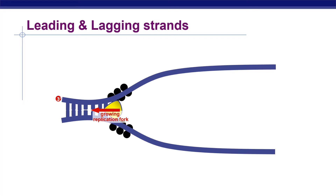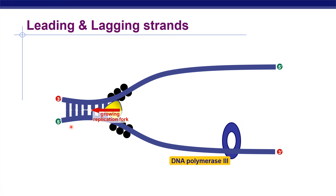DNA polymerase can add new nucleotides only to the 3 prime end of an existing strand and hence can only synthesize DNA in the 5 prime to 3 prime direction. Since the leading strand runs in that direction, synthesis can occur continuously — it starts from the 5 prime end and ends at the 3 prime end. DNA polymerase III recognizes the 3 prime hydroxyl end of the RNA primer and adds new complementary nucleotides. As the replication fork progresses, new nucleotides are added continuously, generating the new strand.